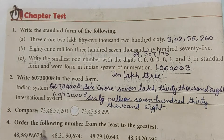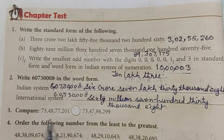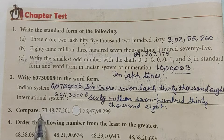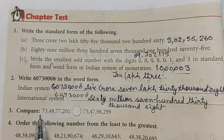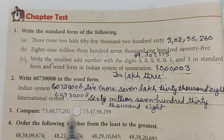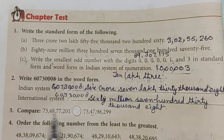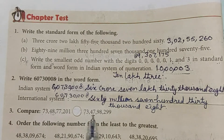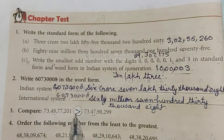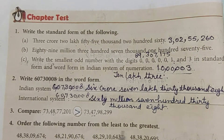Now compare the two numbers. We start from the leftmost digit. Going left to right: seven equals seven, three equals three, four equals four, then eight versus seven — eight is greater than seven. So this number is greater than the other number.